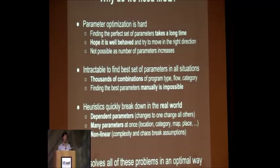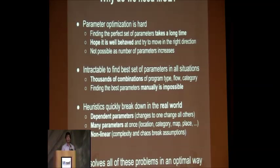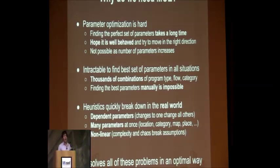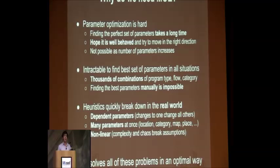So why do we need MO? Hyperparameter optimization is a very difficult problem. In practice, a lot of people just do grid search or random search, which can be exponential in the number of dimensions. Some people just ignore the problem. It can be intractable to reason about these in every individual situation — if you have a thousand different categories or a bunch of different device types, spending time thinking about each one doesn't work with engineering bandwidth. Your heuristics can quickly break in the real world if you're assuming convexity or linearity or that two things don't interact. MO tries to tackle these problems from the ground up in an optimal way.